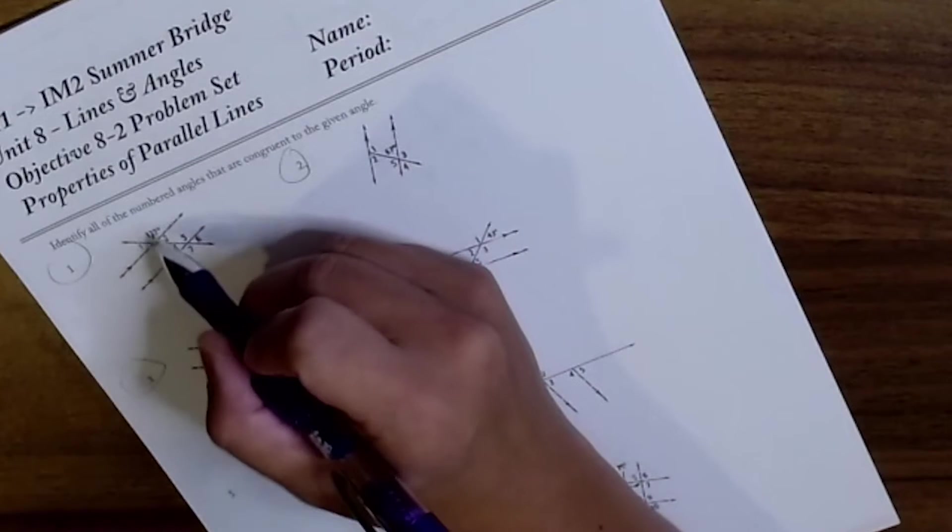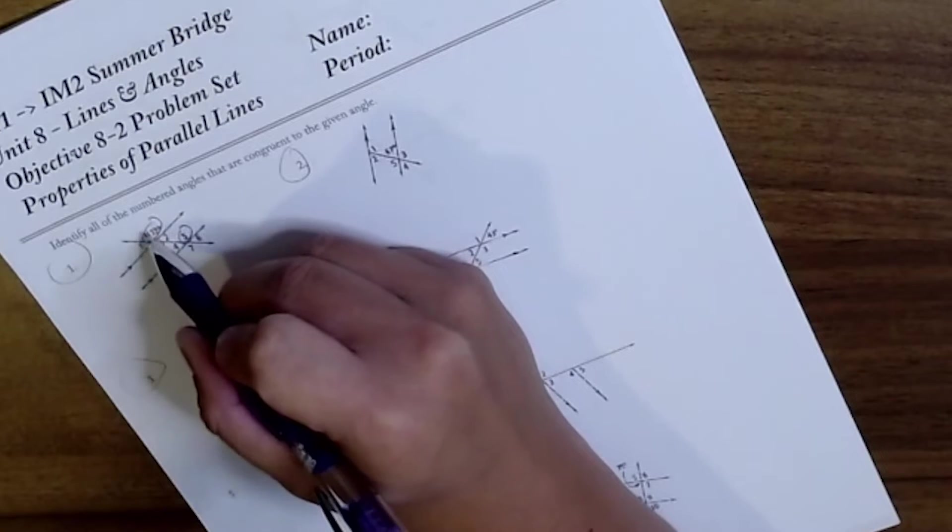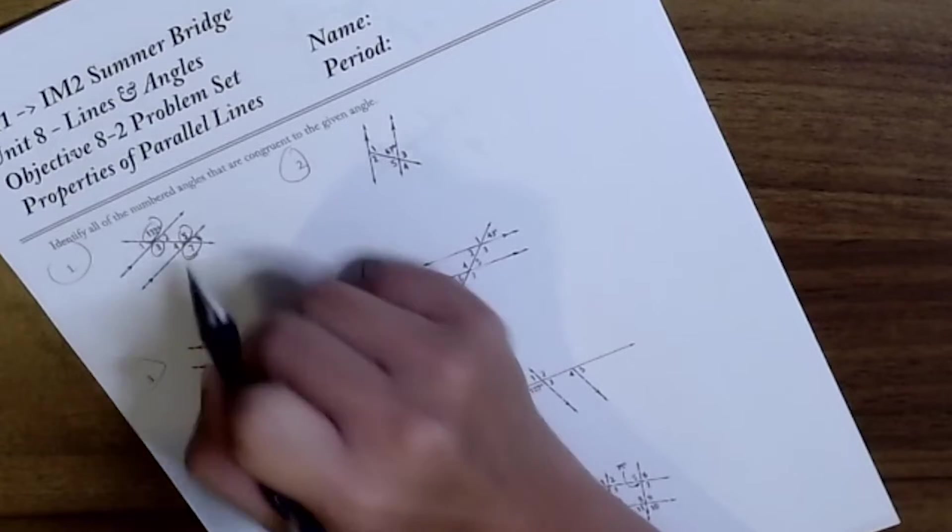Alright, so we're back. Which ones are congruent to 132? Angle 3, angle 5, so 3 is vertical, 5 is alternate interior, 7, because 5 and 7 are vertical.